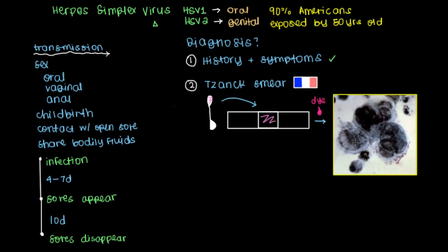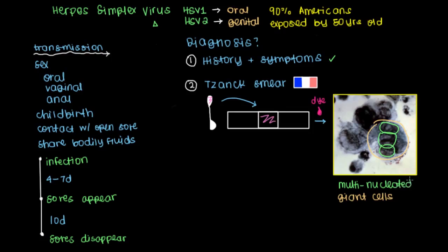What you should see if this patient has herpes are these giant cells. These are supposed to be epithelial cells from the swab of the lip or from the genitals. So we see a couple of giant cells here. What's interesting about these cells is that they don't have just one nucleus — there are several of them. So this cell is multi-nucleated, and that is suggestive of a diagnosis of herpes.